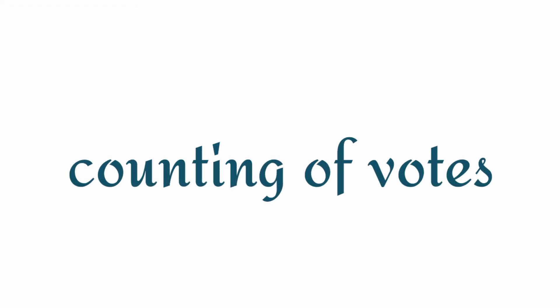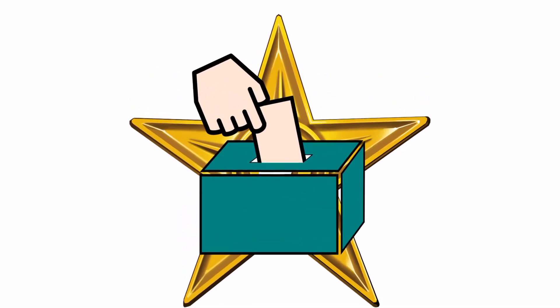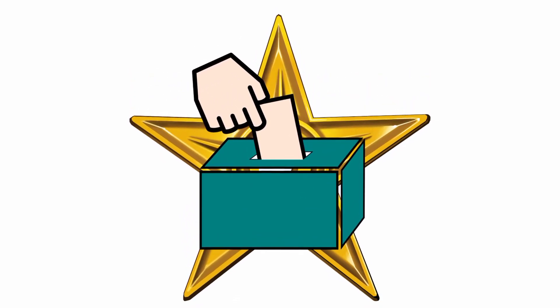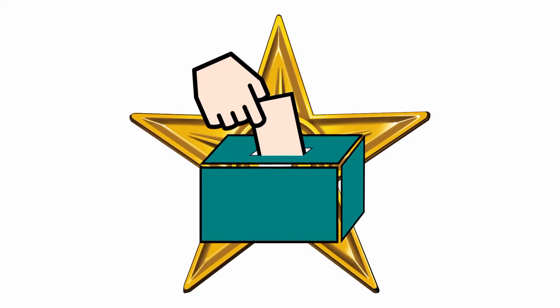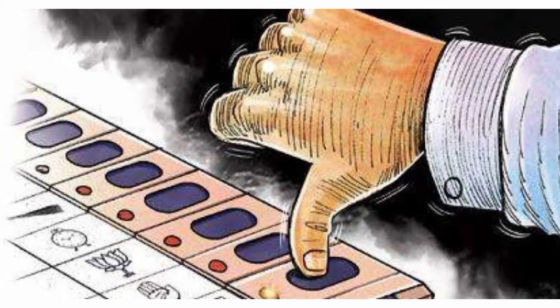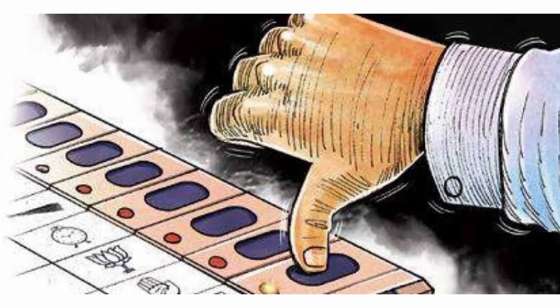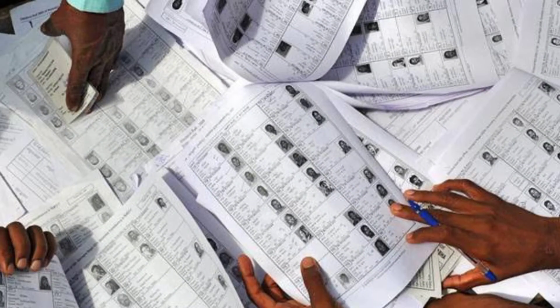Now let us see counting of votes. The counting of votes is done at the counting center by the counting officials in the presence of candidates and their agents. The counting of votes has become easier and quicker with the introduction of the Electronic Voting Machine. Before EVMs, it was very difficult to count the votes, but after their introduction it became very easy.